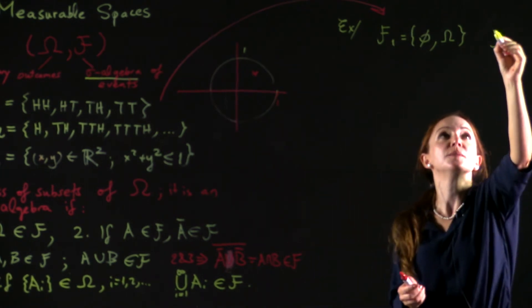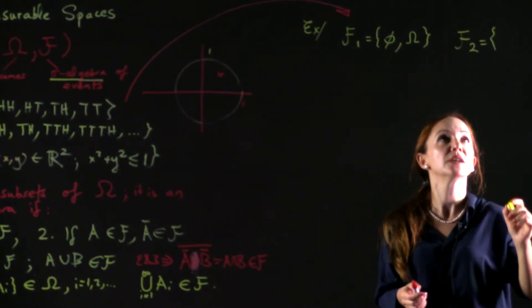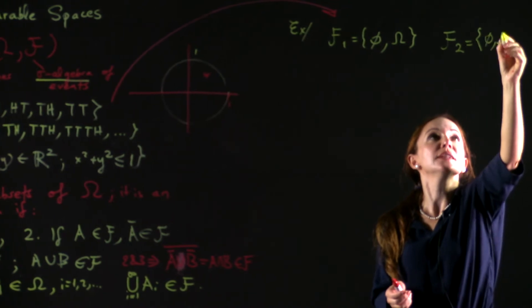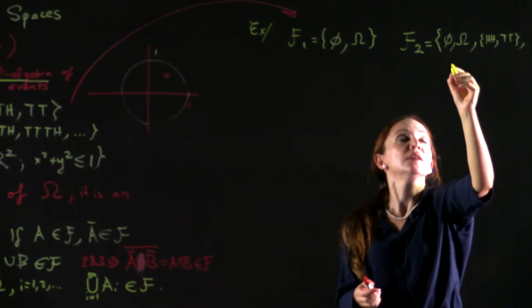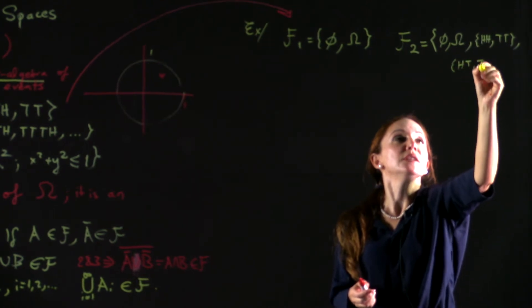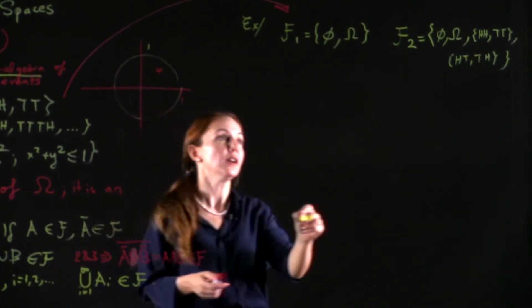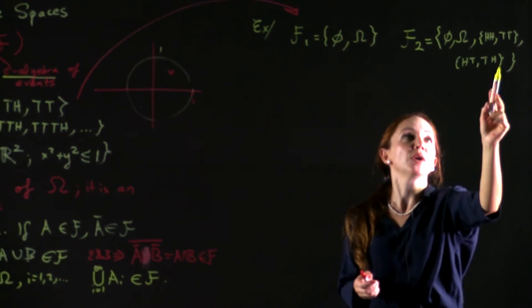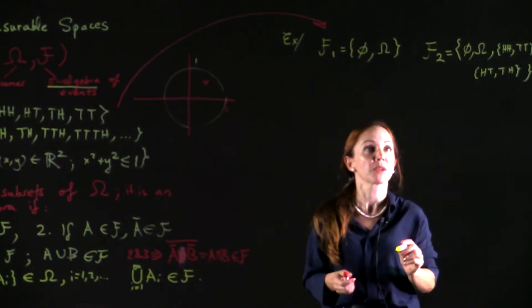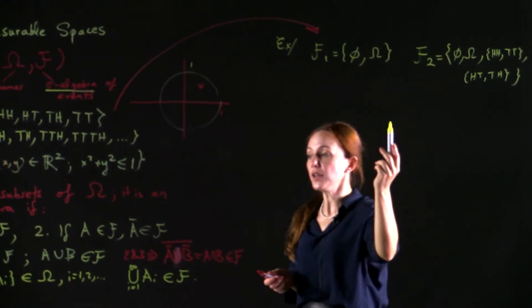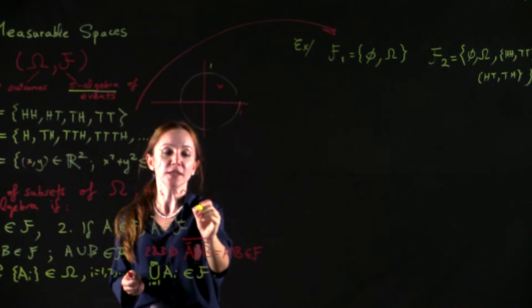Another valid algebra for this omega 1 would be empty set, omega, HH, TT, HT, TH. This is also fine. It satisfies 1, 2, and 3. Because these two elements, these two sets have no intersection, and their union is omega. So this is a closed ring. Actually, algebra is a ring with identity. Why? Because the identity is omega. Omega intersection A or A intersection omega is always equal to A, so this is a ring with an identity.